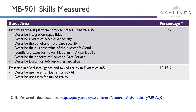Let's walk through the skills measured across four key areas of Dynamics 365 for this MB-901 exam. The first area is that you must be able to identify Microsoft platform components such as integration and security. The second area covered is that you'll need to be able to describe artificial intelligence and mixed reality use cases in Dynamics 365.